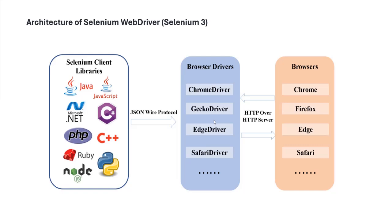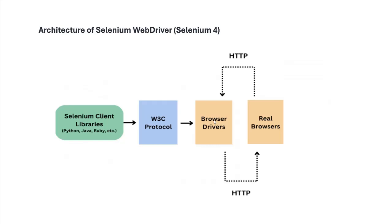So this is how the architecture looks in Selenium 3. In Selenium 4, the Selenium client libraries remain the same, the browser drivers remain the same, and the browsers remain the same. What changes is the communication protocol — in Selenium 3 we were using the JSON wire protocol, but in Selenium 4 the W3C protocol is used. That is the only difference between Selenium 3 and Selenium 4. The client libraries communicate using the W3C protocol to the browser drivers, which then communicate to the real browser via HTTP in a two-way communication. Once you get the response back, the result is displayed on your IDE.